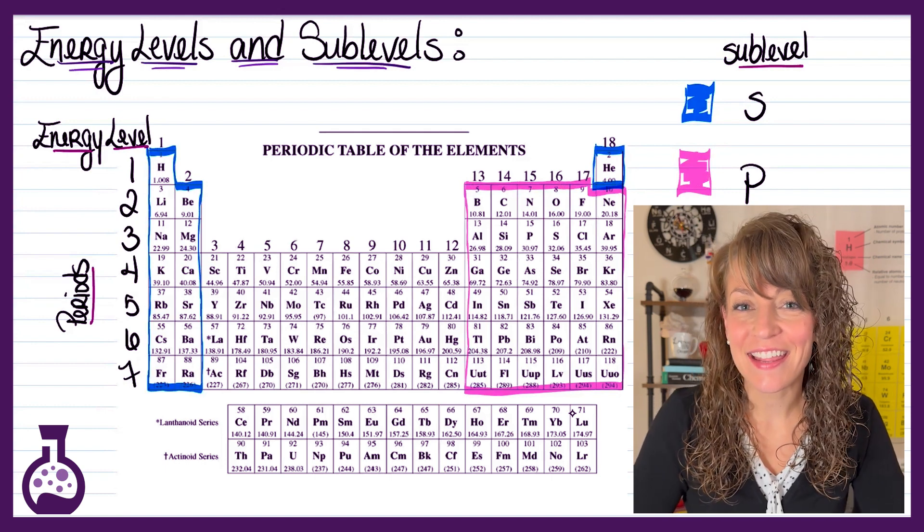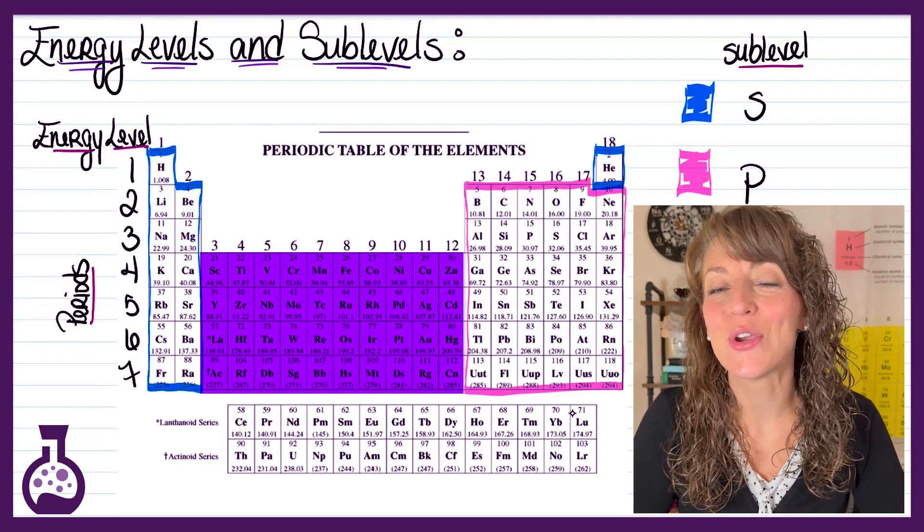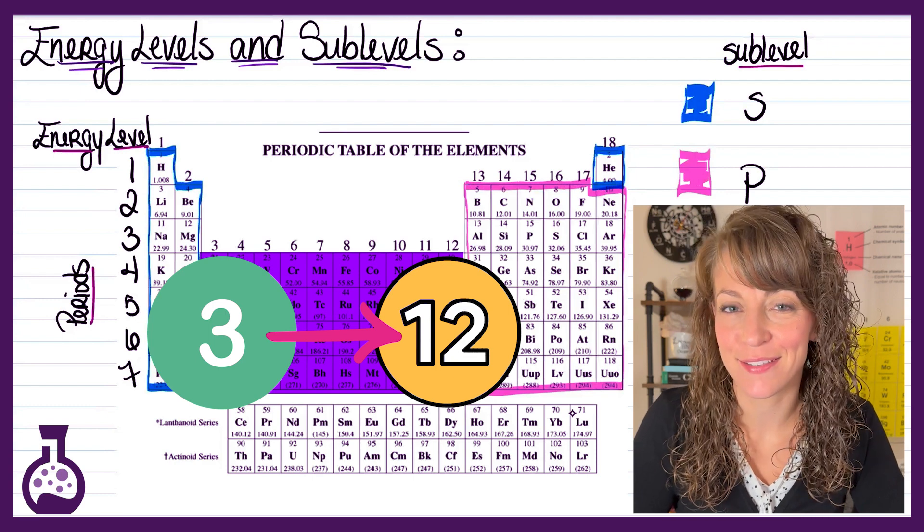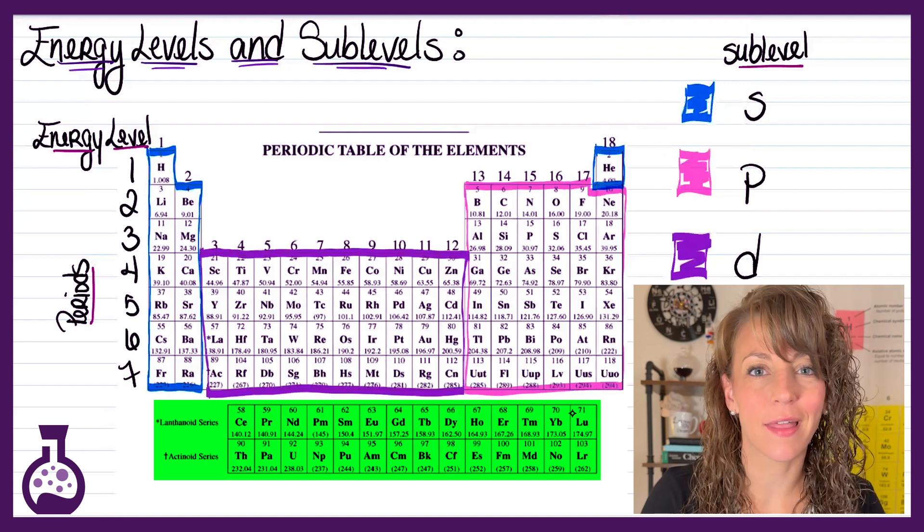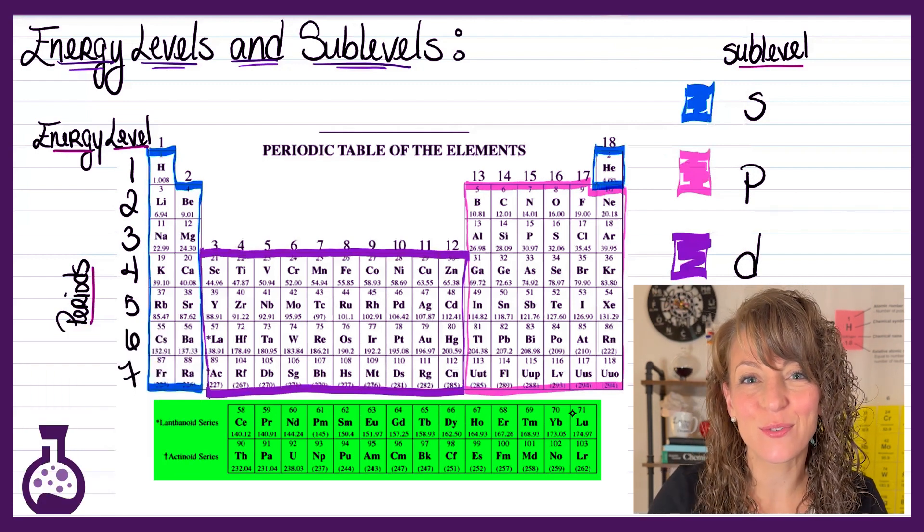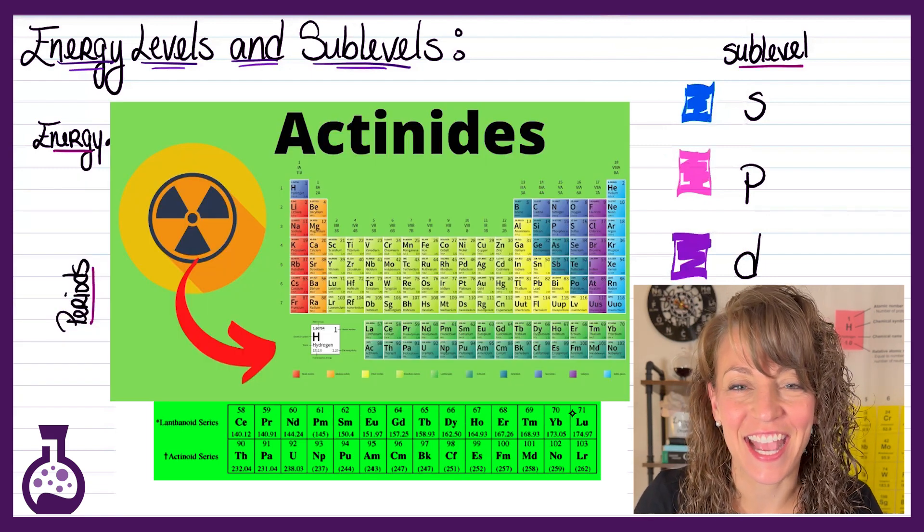Third sublevel, that is going to be your d sublevel. And your d block elements run from groups 3 through 12, so your transition metals. Last but not least, you have your f sublevel, and your f block on the periodic table is going to be those very bottom two rows, your lanthanides and your actinides.